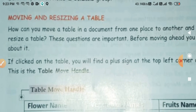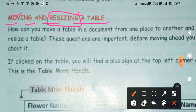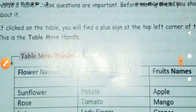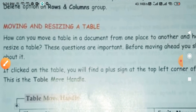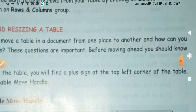Next point of this chapter: Moving and Resizing a Table. Moving a table means relocating it within the document to whatever position you want. Resizing means making the table size smaller or larger according to your requirement. How can you move a table from one place to another, and how can you resize a table?